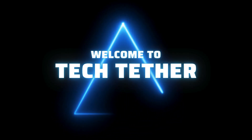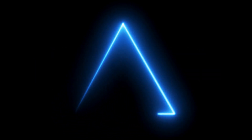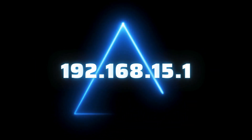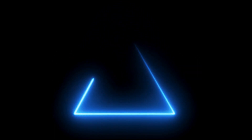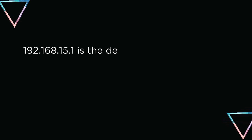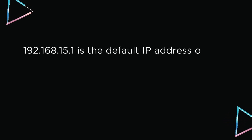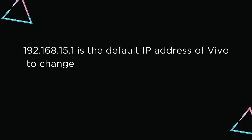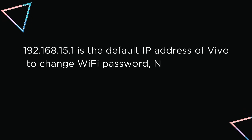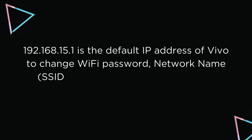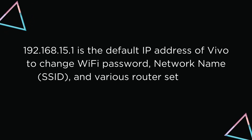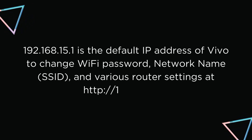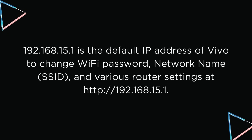Welcome to TechTether. 192.168.15.1 is the default IP address of Vivo to change Wi-Fi password, network name, SSID, and various router settings at http://192.168.15.1.